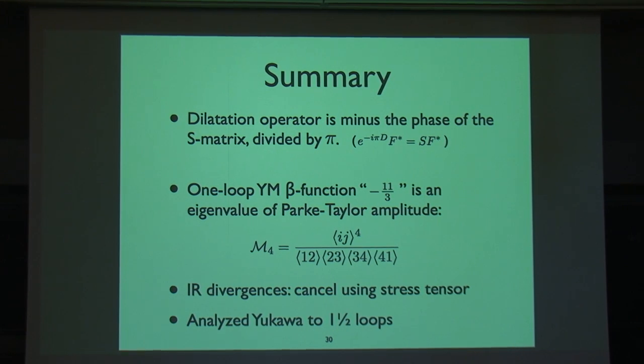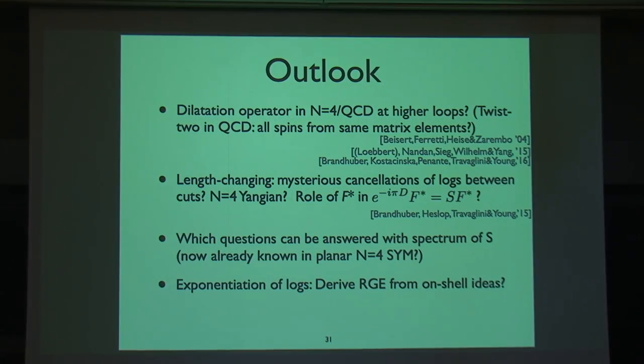Let me summarize. The main message, remember something: the dilation operator is minus the phase of the S-matrix divided by π. At one loop, this works very nicely, and essentially this minus 11/3 comes from, you can understand it as an eigenvalue of this two-to-two scattering. If you didn't like this formula, then that gives you one more reason to like it. And infrared divergences are not a fundamental issue here, you can cancel them using the stress tensor. And you can analyze Yukawa theory at one loop and a half.